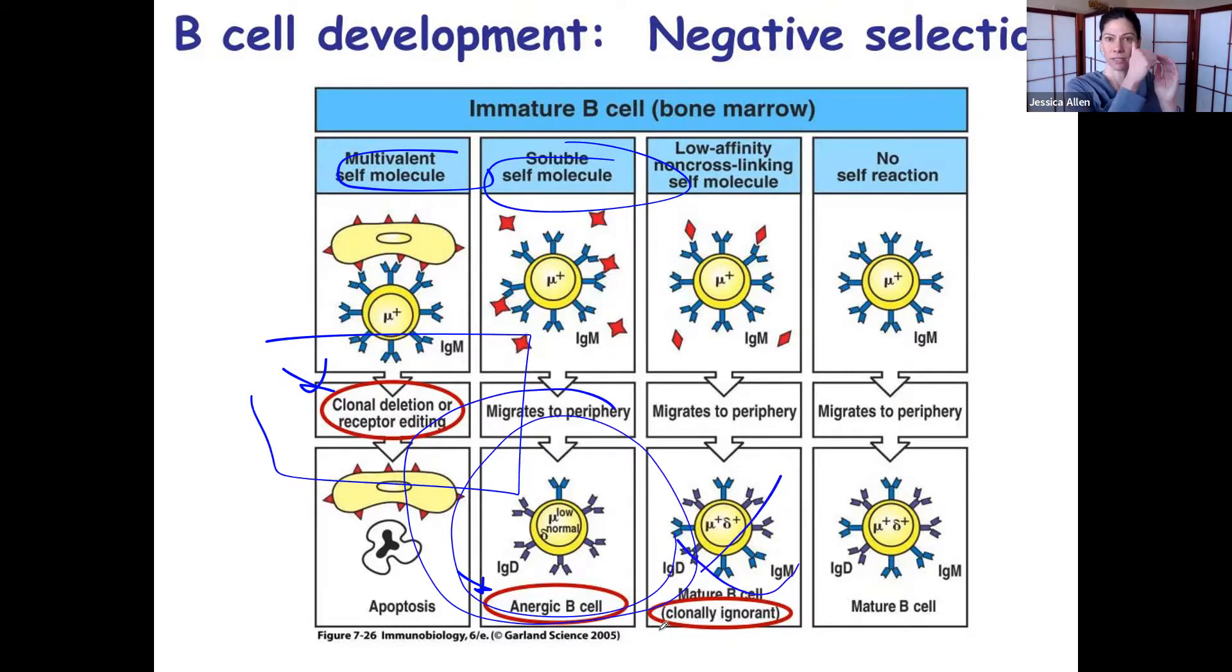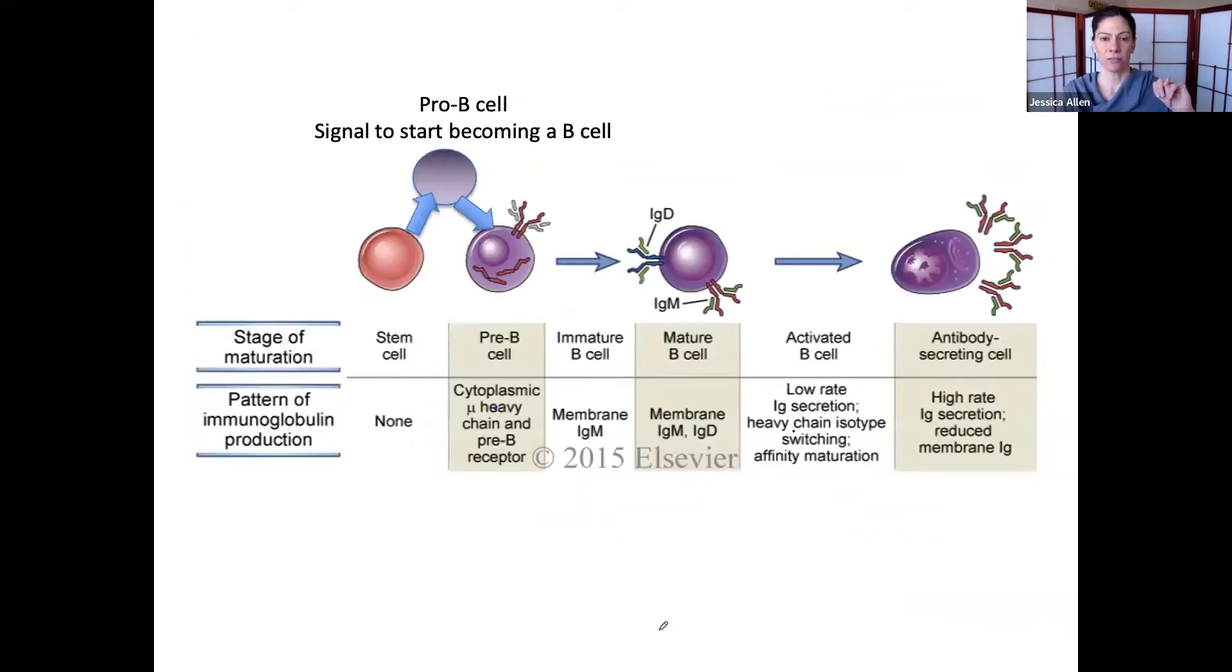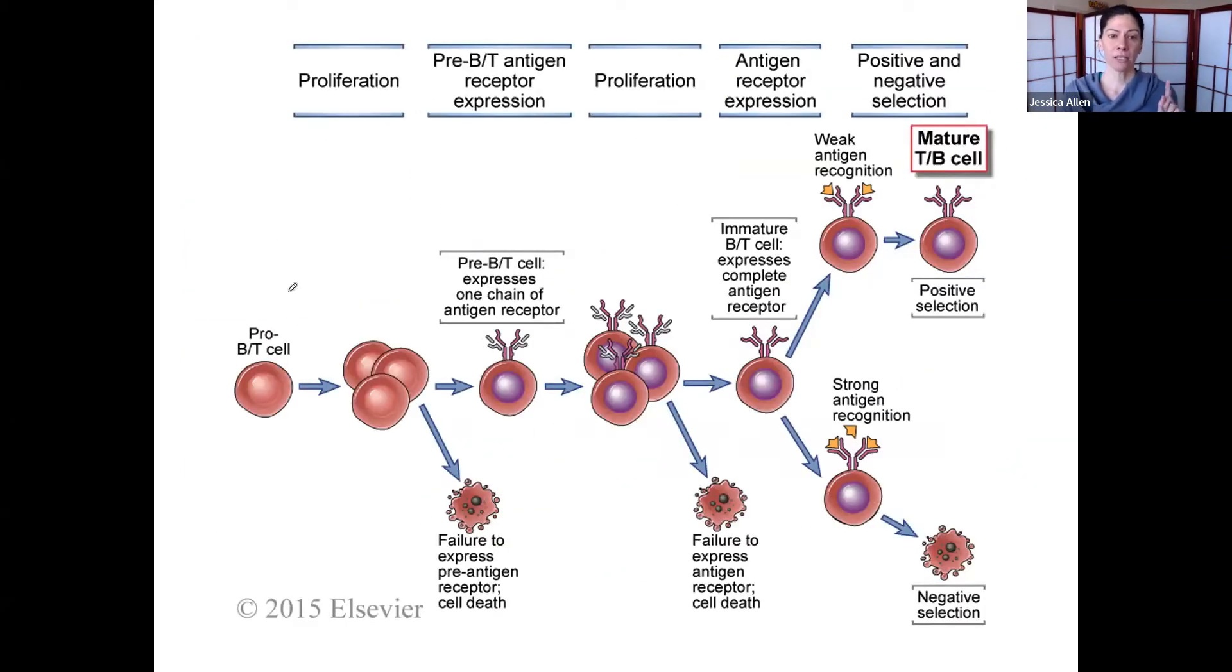So, can you make a heavy chain that combines the surrogate light chain and IG-alpha and beta? If so, you can go from pro-B-cell to pre-B-cell.